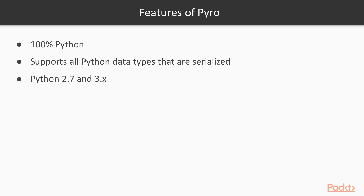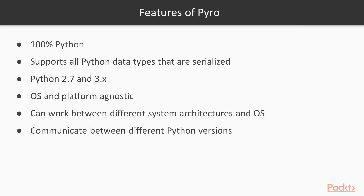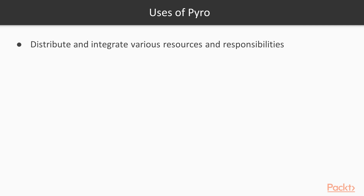Pyro runs on Python 2.7, Python 3.x, IronPython, and is OS and platform agnostic. It can work between different system architectures and operating systems, and is able to communicate between different Python versions. It can use IPv4, IPv6, and Unix domain sockets.